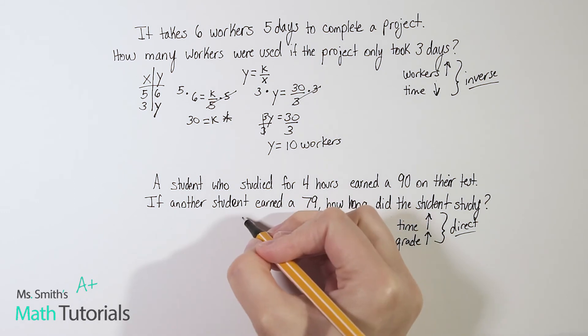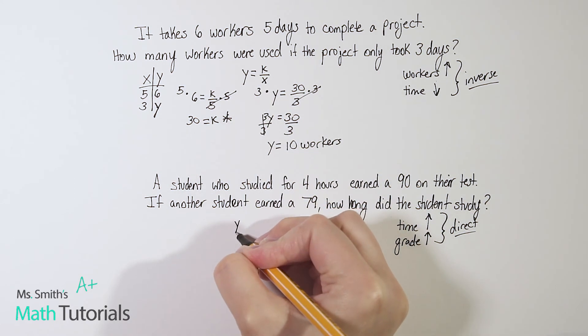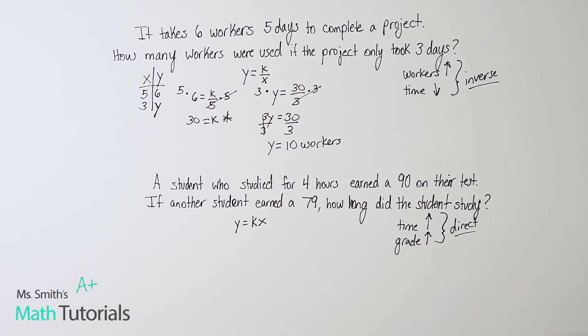So for that one, we need not the inverse formula we were using before, but now we're going to use y equals k times x instead of k divided by x since it's a direct variation. And other than that, works pretty much the same. We're just going to be using this formula instead of the other one. All right, so let's lay out our x, y chart. And so what do we know? We know if a student studied four hours. Remember, if we got that time value, that's going to be our x. So they studied four hours, then they earned a 90. We want to know if a student earned a 79. How long did they study?